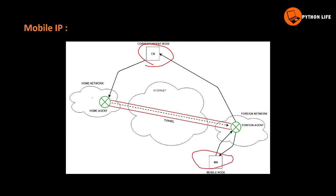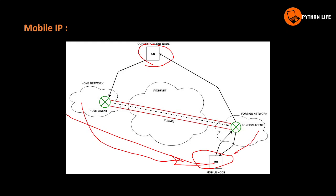This is the mobile IP. The home agent is in the home network. The mobile node is here. This home network is now foreign to us — this is a foreign network. This is a packet with a destination address. The mobile node has a mobile home address.